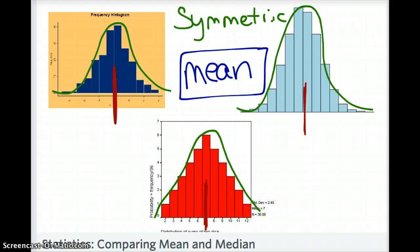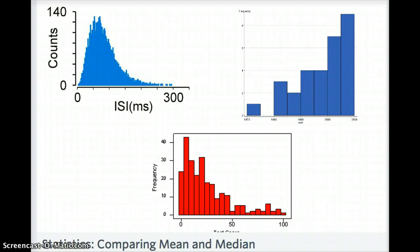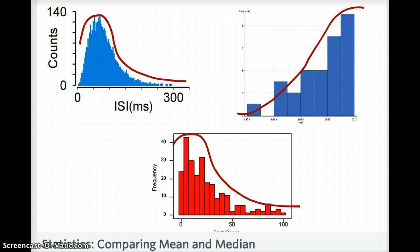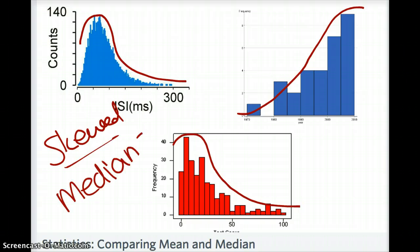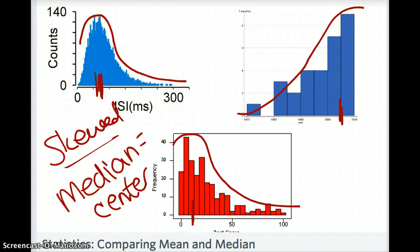So what happens if the graph is not symmetrical? If it's not symmetrical, it's considered skewed. The first graph shown here is right skewed, the second is left skewed, and the third in red is also right skewed. When it's right skewed or left skewed, no matter how severe the skewness, you want to use the median for your center. Your median will be somewhere close to your peak, depending on the distribution.